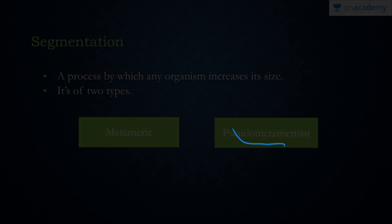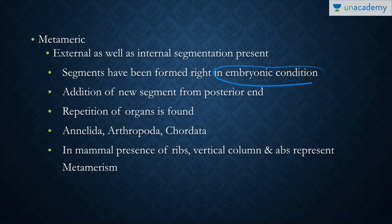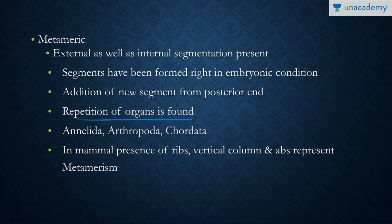In metameric or true segmentation, there is both external and internal segmentation. The segments are formed in the embryonic stage, not in the adult stage, and no new segments are added after the adult has been formed. During the embryonic state, new segments are added at the posterior end first, and there is repetition of organs found in the following segments.